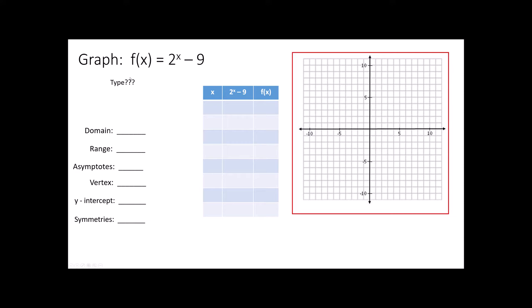What's much more useful is to look at the function and begin to identify characteristics that might help us graph it faster. For example, whenever I start graphing a function, I always ask myself first: what type is it? In our case today, it's very obvious this is going to be an exponential function because that is the name of the slideshow. However, if this problem was given to us in a different setting, I could still tell this was going to be an exponential function because my x is in my exponent.